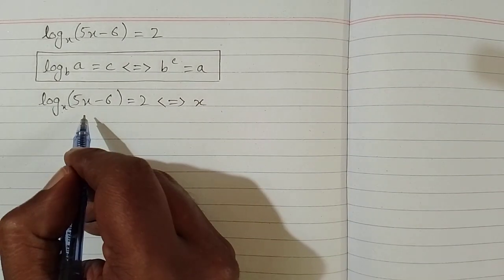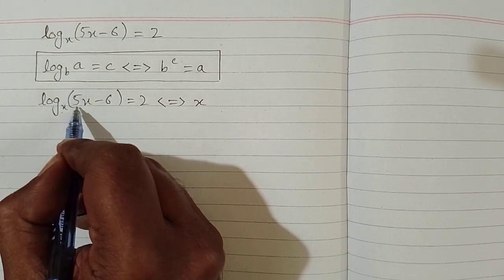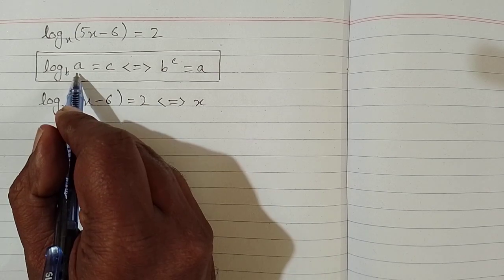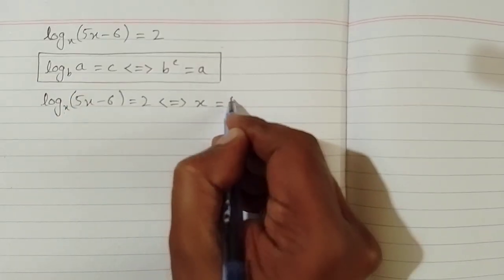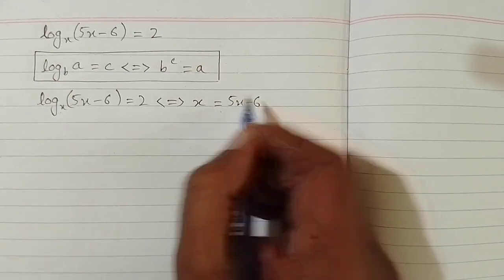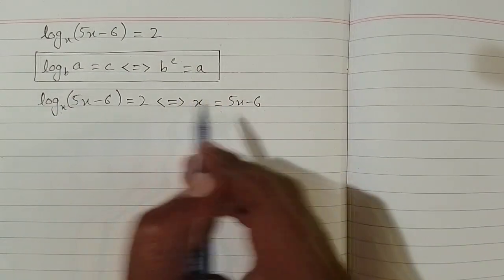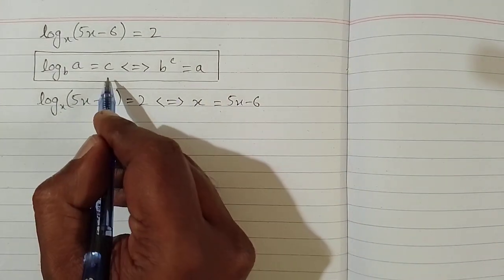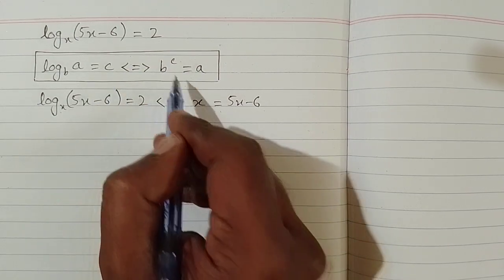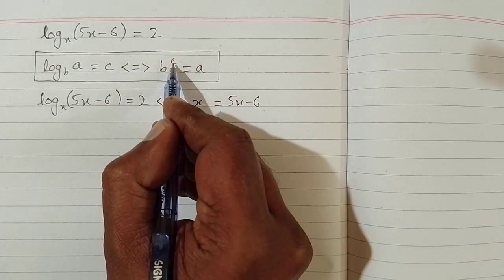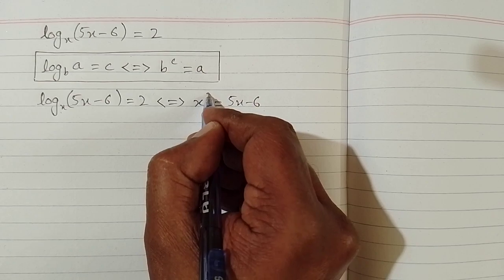And then we have 5x minus 6 in place of this a, so we can write 5x minus 6 in place of this a. And the value of c is 2, so we will write the value 2 over here.